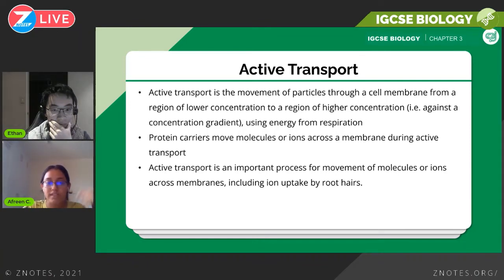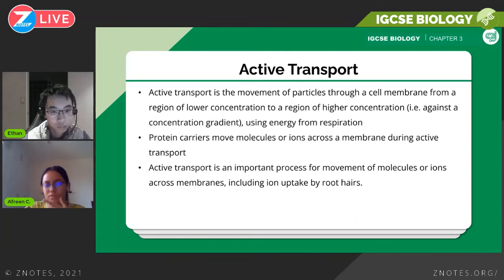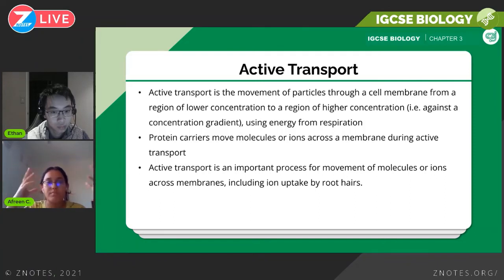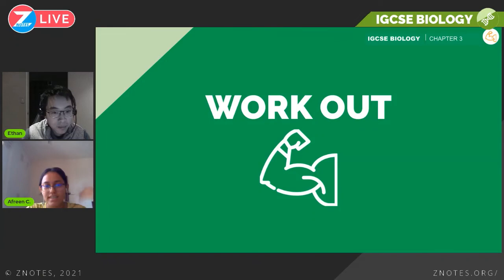For active transport, you also need to know that protein carriers are used to move molecules or ions across a membrane. You just need to know that statement. In Paper 2, the MCQ paper, they may give you a list of definitions to choose from, or a scenario such as 'nutrients are being absorbed by this plant — what process is occurring here?' That's the kind of question to expect.